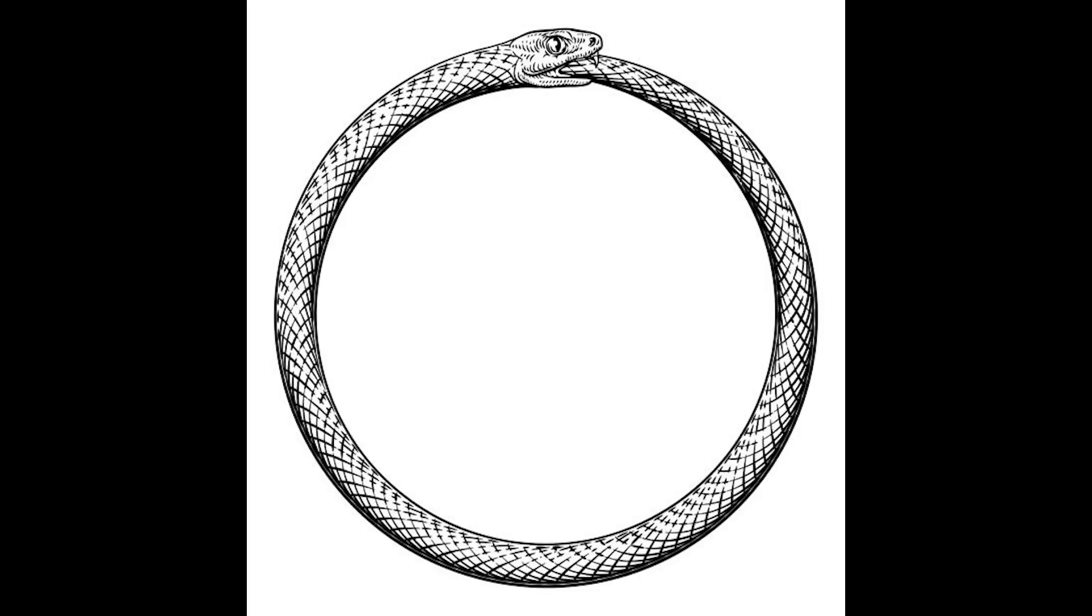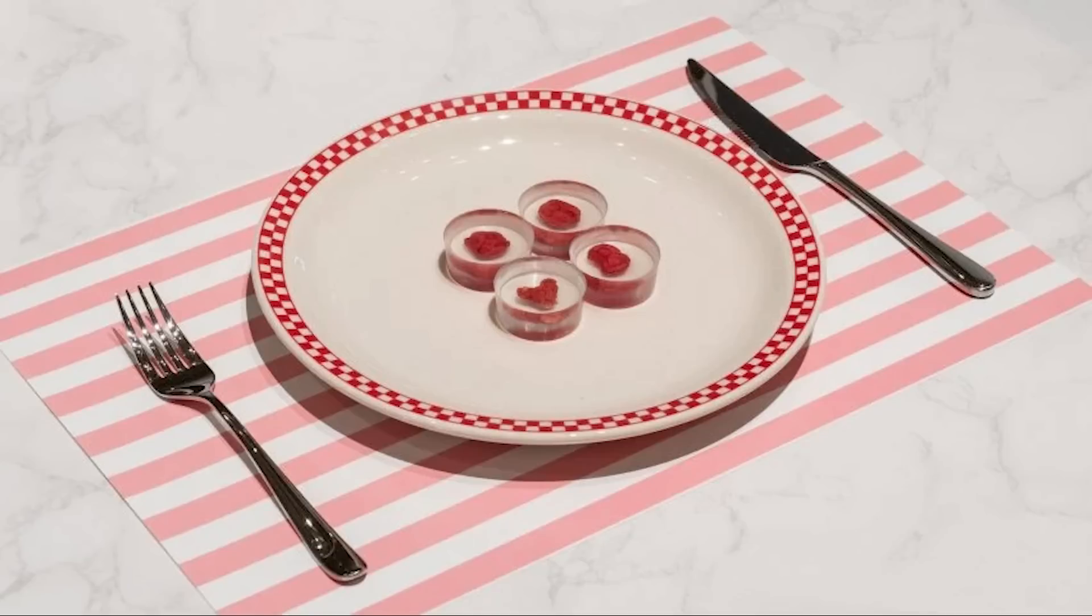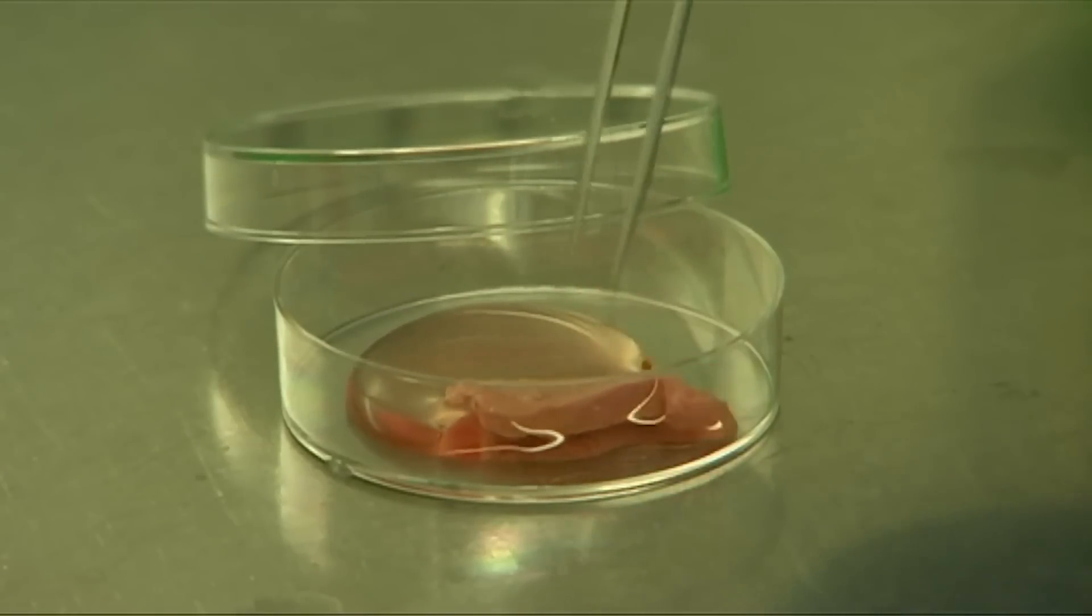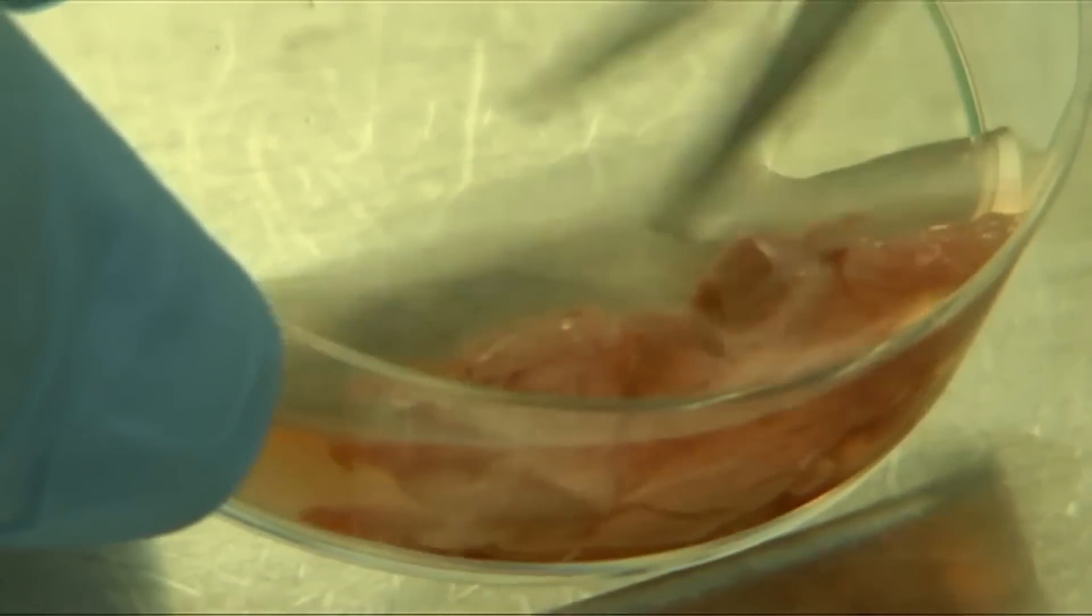The Ouroboros steak is a concept idea developed by American scientists and designers. Using a kit, anyone can grow their own lab-grown steaks at home, using cells harvested from the inside of their own cheeks.